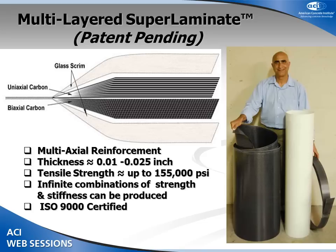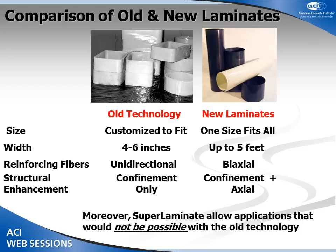The new generation product is flexible enough, but it's laminate — not sheets — that you can wrap around the column, fill the gap, and then have a ready-to-use product. Some specifications indicate there are similar materials available in the market, but his product appears to have very high strength, going up to 155 KSI. Comparing old technology versus new laminates: the old one came in narrower widths of 4 to 6 inches, whereas the new one can be 5 feet wide, continuous, allowing overlapping wrapping. It features unidirectional fibers versus biaxial or bidirectional fibers, and provides confinement plus flexural enhancement rather than confinement alone.